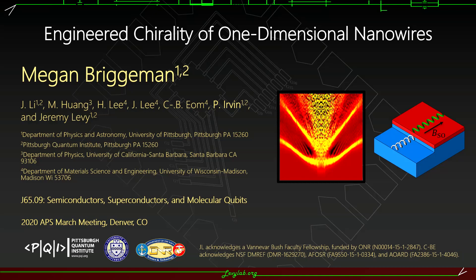I'm going to be telling you how we create nanowires at the interface between the insulating oxides lanthanum aluminate and strontium titanate, and how we engineer the properties of those wires by engineering their structural properties.